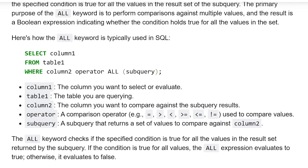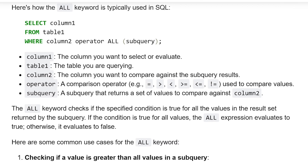Here is how the ALL keyword is typically used in SQL: SELECT column1 FROM table1 WHERE column2 operator ALL (subquery). Column1 is the column you want to select or evaluate. Table1 is the table you are querying. Column2 is the column you want to compare against the subquery result. Operator is a comparison operator — equal to, greater than, less than, greater than or equal to, less than or equal to, not equal to — used to compare values. Subquery is a subquery that returns a set of values to compare against column2.